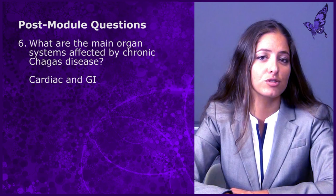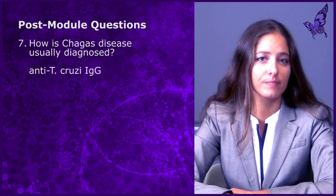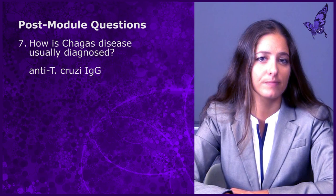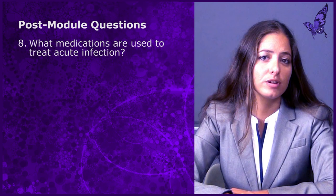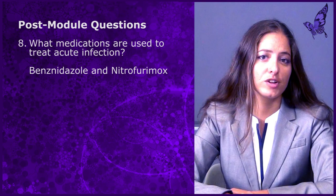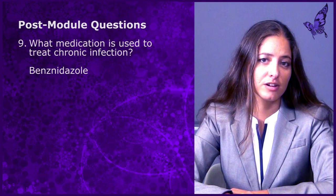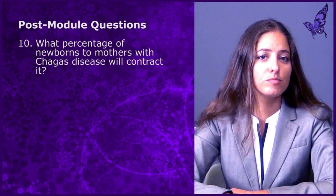Question seven: How is Chagas disease usually diagnosed? This is through anti-Trypanosoma cruzi IgG. Question eight: What medications are used to treat acute infection? The answer: benznidazole and nifurtimox. Question nine: What medication is used to treat chronic infection? The answer is benznidazole. And finally, question ten: What percentage of newborns to mothers with Chagas disease will contract the disease? The answer is up to twelve percent. This concludes our module on Chagas disease. Thank you for your attention.